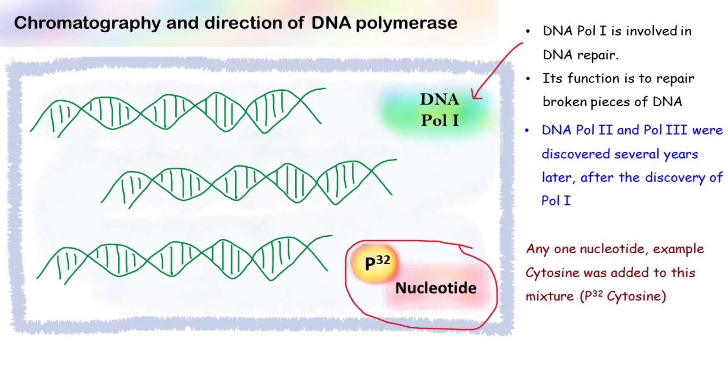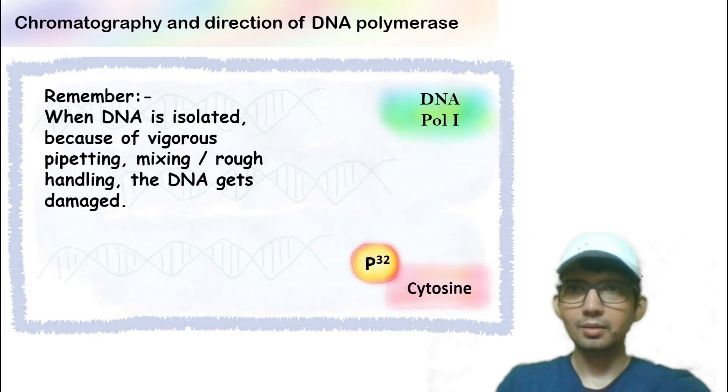Coming back to our experiment, the DNA was taken and mixed with polymerase 1. Out of four nucleotides, any one nucleotide—let's say cytosine—was added to this mixture. This cytosine was labeled with P32.